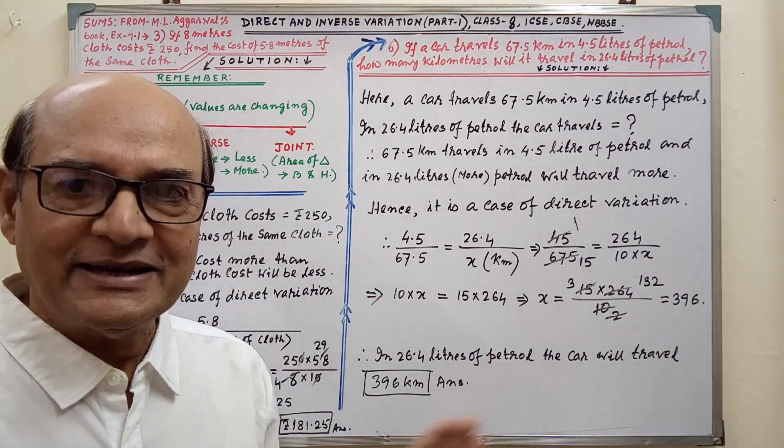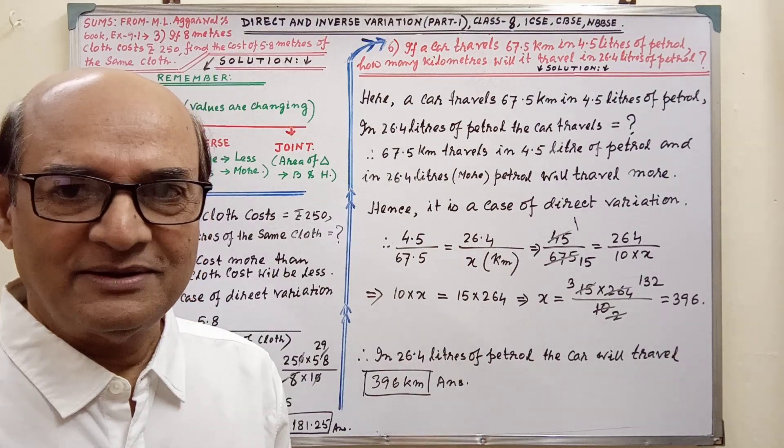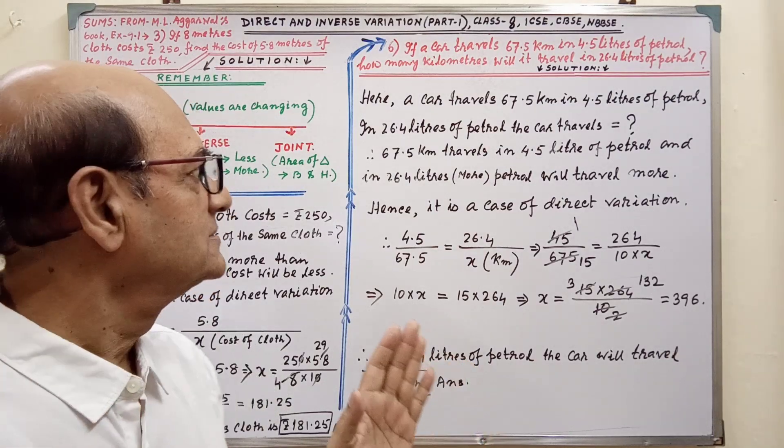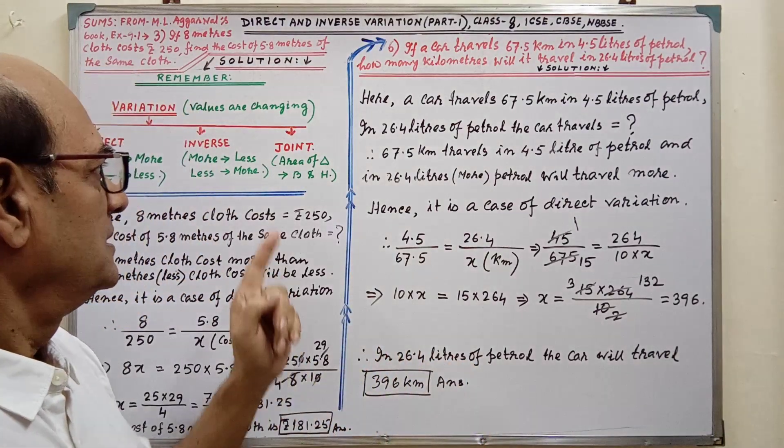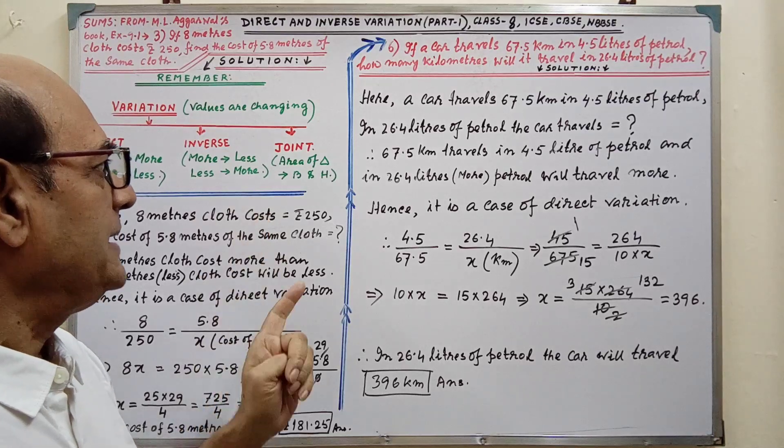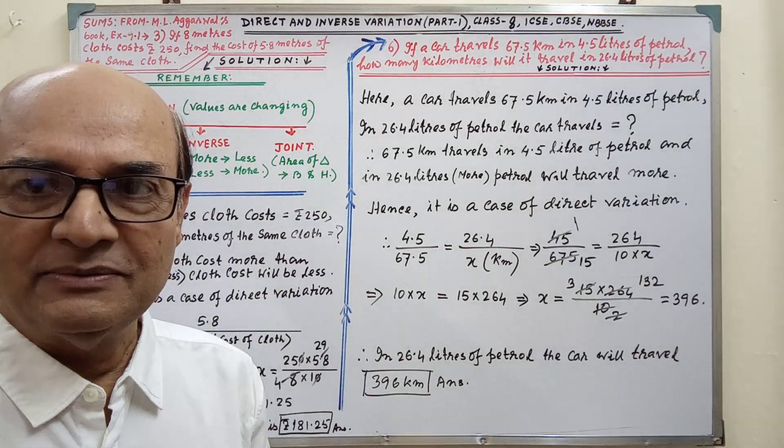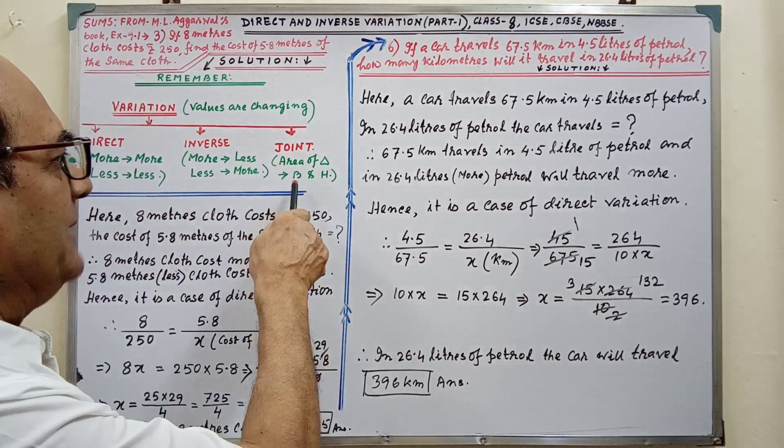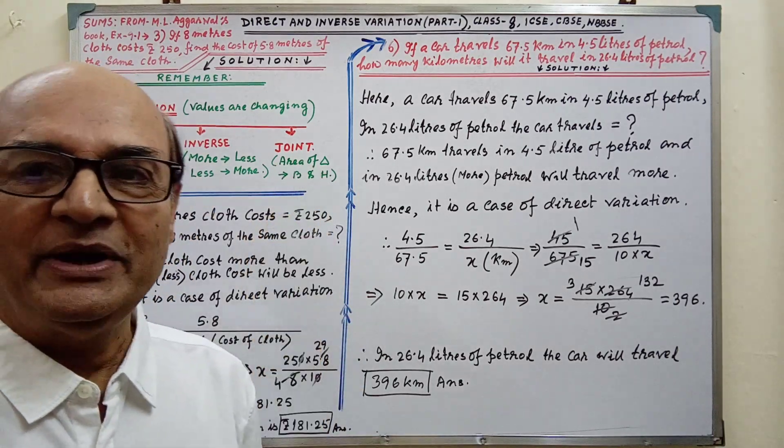And joint variation. That is not in your syllabus, but for your information, that is given as area of triangle. If area of triangle is more, then height, base and height also will be more.